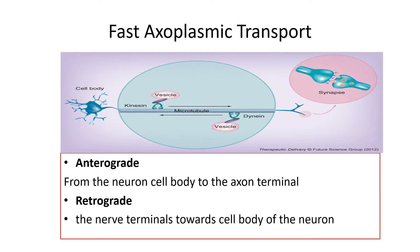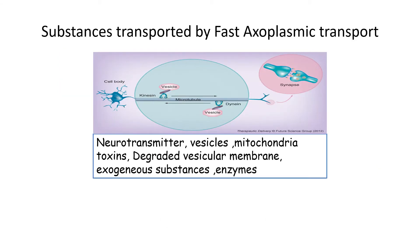Fast axoplasmic transport can be further categorized into anterograde and retrograde. Anterograde means transport from the neuronal cell body to the axon terminal, while retrograde is from the nerve terminal back toward the cell body. Substances required for neurotransmitter synthesis — including neurotransmitters themselves, synaptic vesicles, and mitochondria — are transported in an anterograde fashion from the soma to the cell terminal.